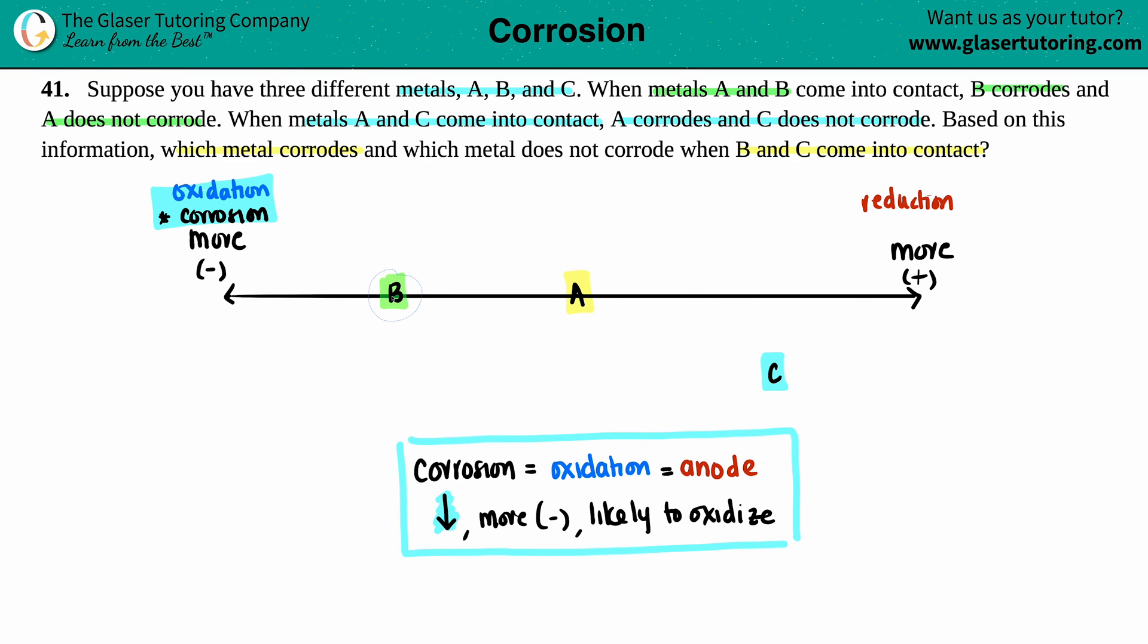Yeah, it's going to be lower, because if B is the one that's corroding, it has to be the one that's going farther down to be becoming oxidized. The more lower the number, the more likely to oxidize. The corrosion is over here.